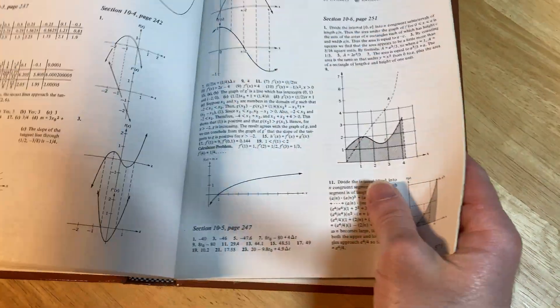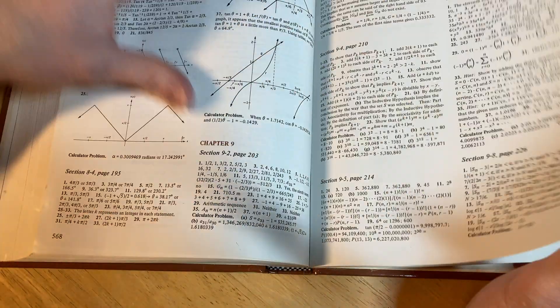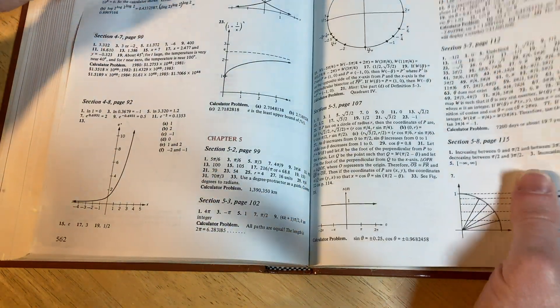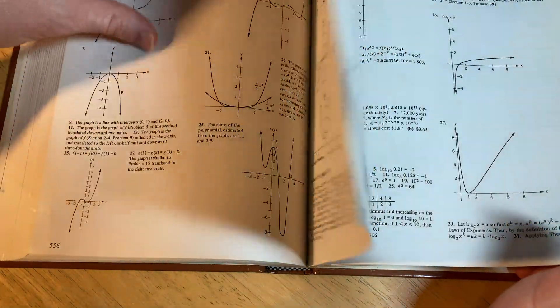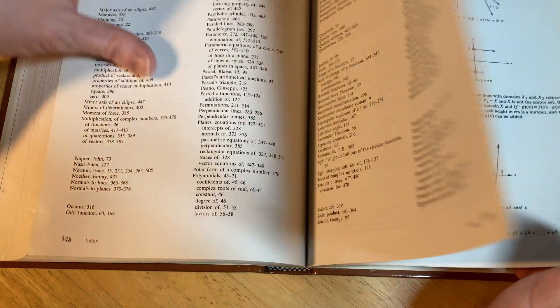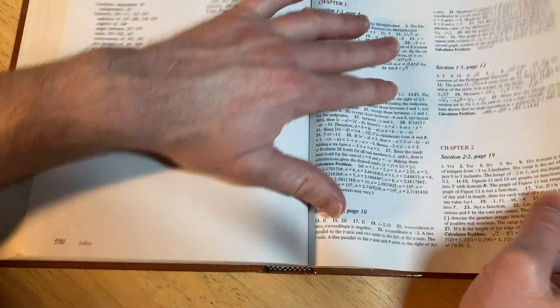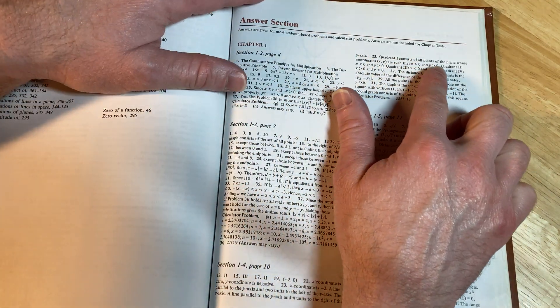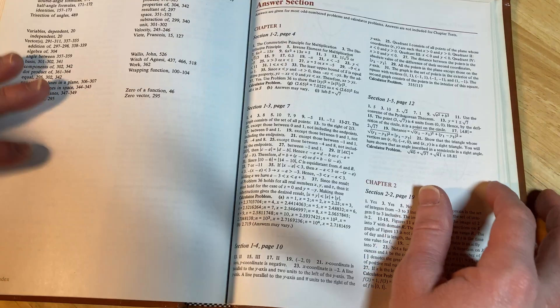And yeah, you do have an answer section. Let's go there. Page 551. So you get answers to the odd-numbered problems, so that's really good. That's what it appears to be - answers to odds. There's quite a few, as you can see. Yeah, answer section. Answers are given for most odd-numbered problems and calculator problems. Answers are not included for chapter tests.